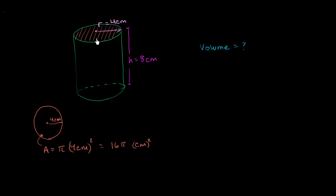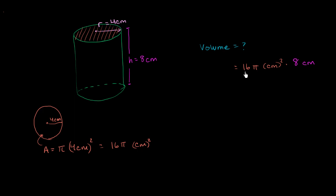The volume is going to be this area times the height. So the volume is equal to 16 pi centimeters squared times the height, times 8 centimeters. Using the associative and commutative properties, it doesn't matter what order we multiply, so this is the same as 16 times 8. Since 8 times 8 is 64, 16 times 8 is twice that — 128 pi. And you have centimeters squared times centimeters, which gives us centimeters cubed, or 128 pi cubic centimeters.